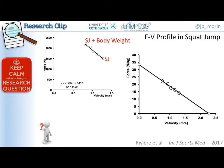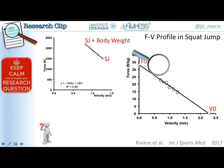When you extrapolate the force-velocity profile, you study the extremes of the relationship. But the big question is that this extrapolation is based on a few points at the center of the relationship. What about the extreme values — F0, the maximum theoretical force, and V0, the maximum theoretical velocity? Are they aligned with the experimental data?